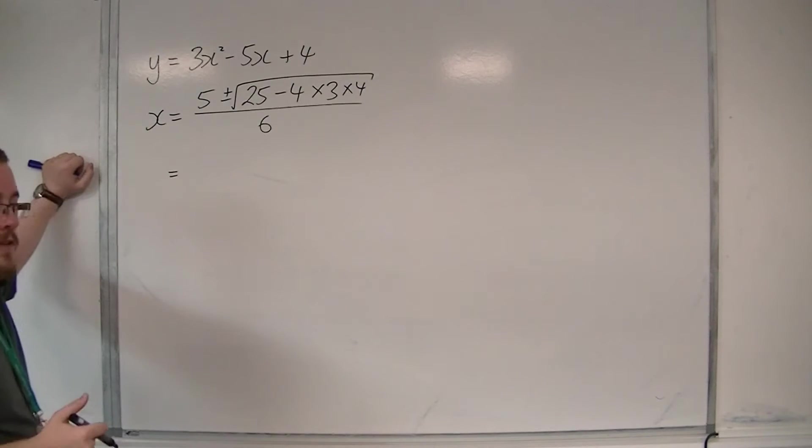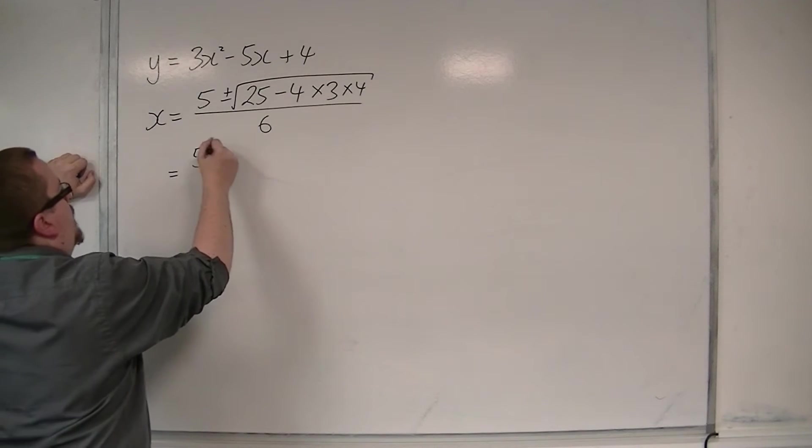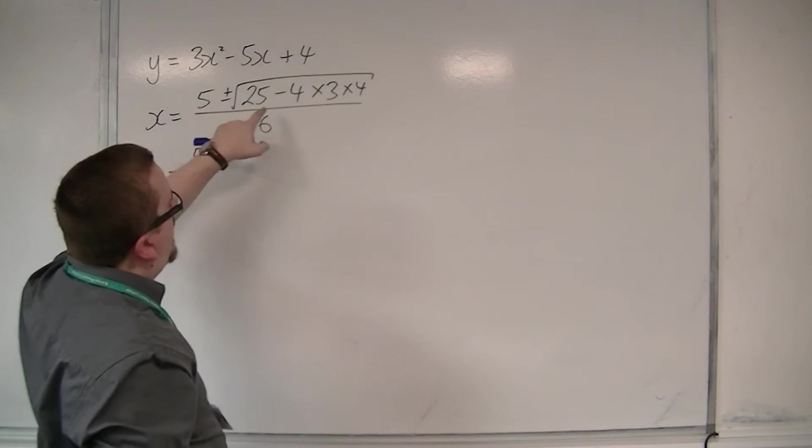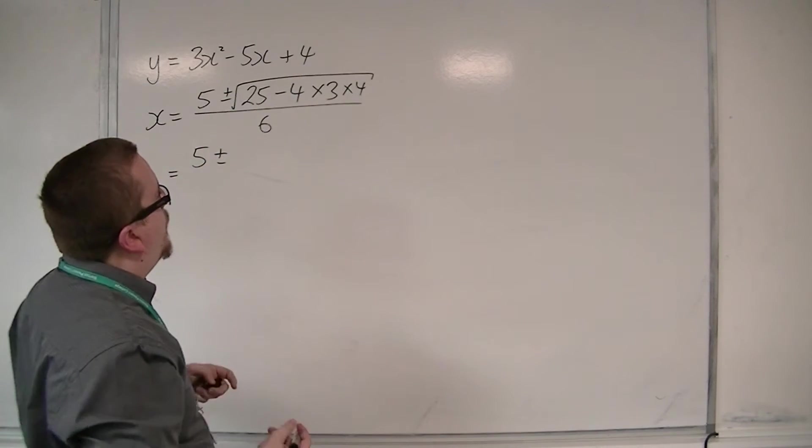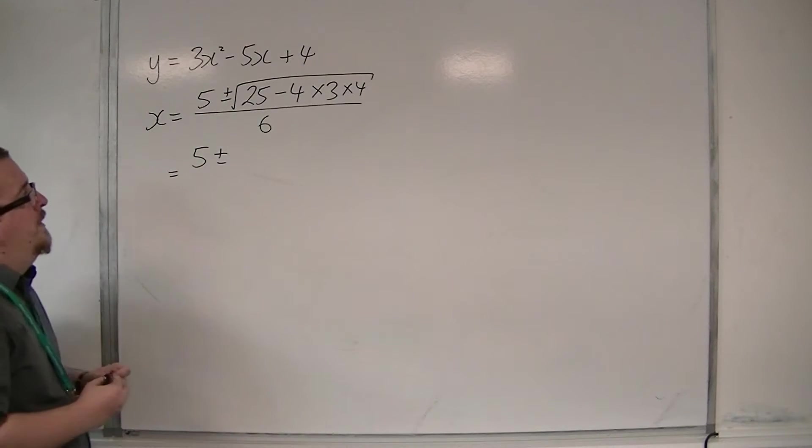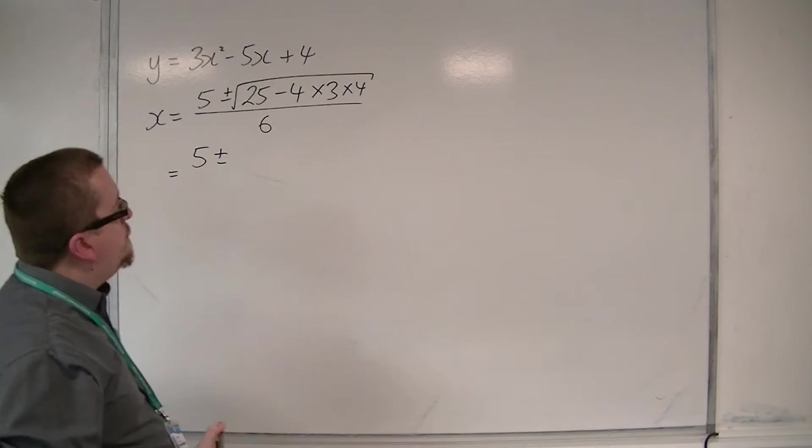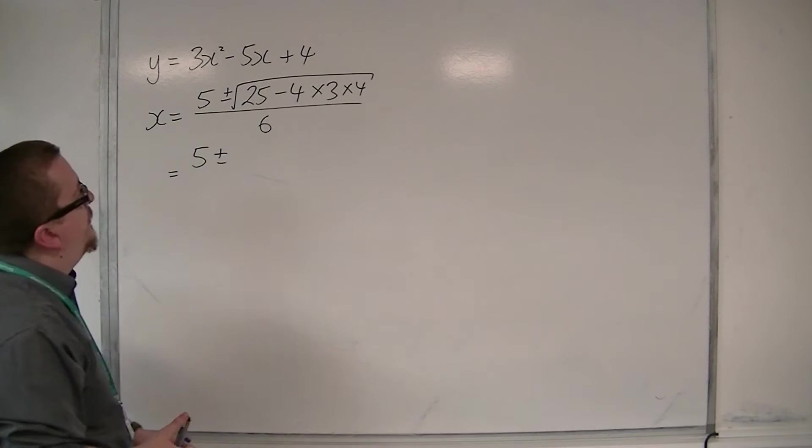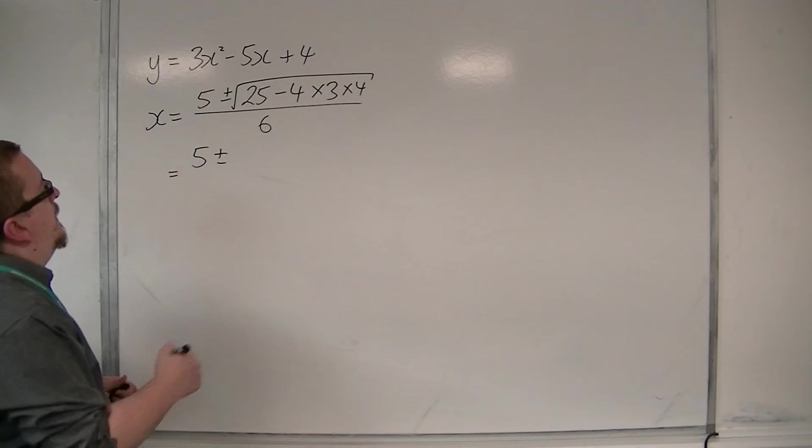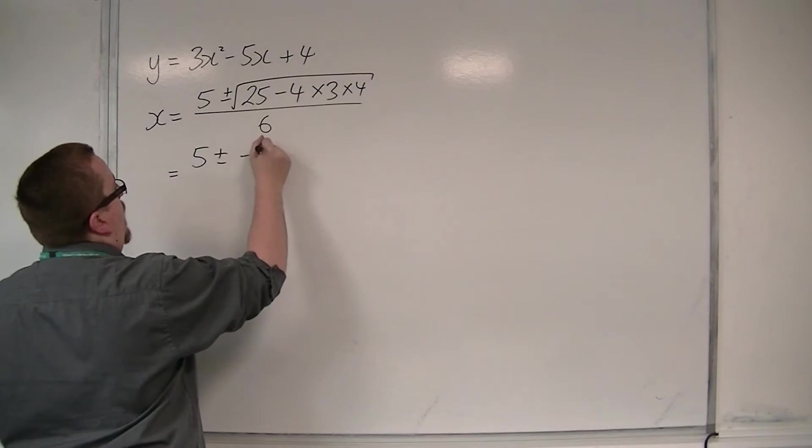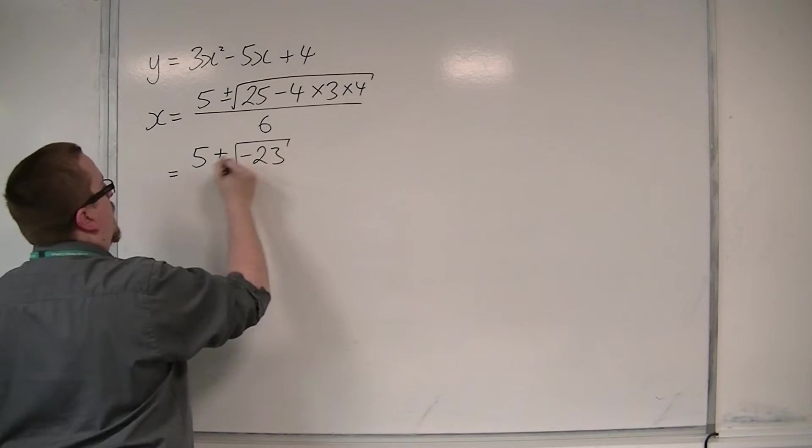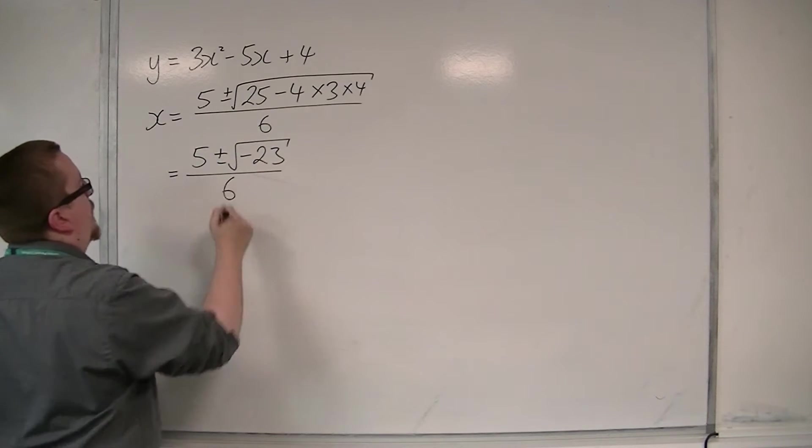Let's simplify this problem. We've got 5 plus or minus, now here we've got 25 take away 4 times 3 times 4, so that's take away 48. So 25 take away 48 is minus 23, all over 2a, which is 6.